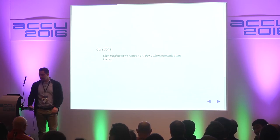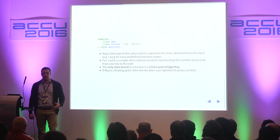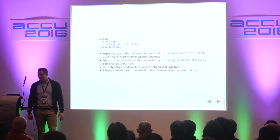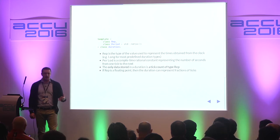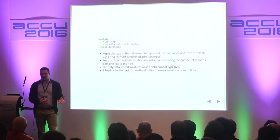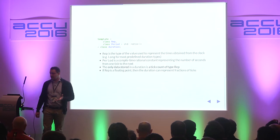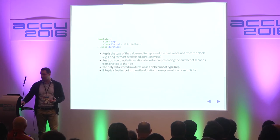Durations are class templates that represent time intervals. The duration class template has two template parameters. The first one, 'rep', is the type of the value used to represent the time, usually long. The 'period' is a compile-time rational constant representing the number of seconds from one tick to another. The only data stored in a duration is a tick count of type rep. If rep is a floating point, then the duration can represent fractions of ticks.